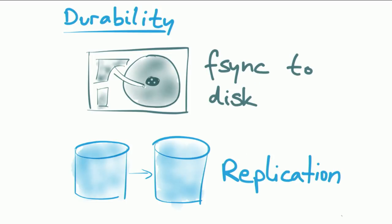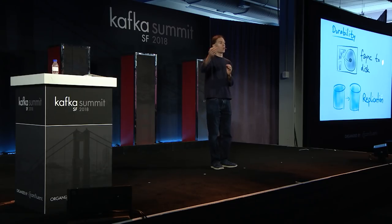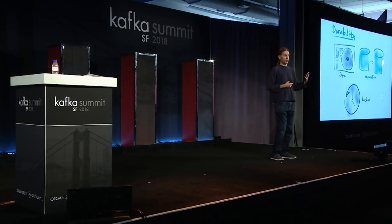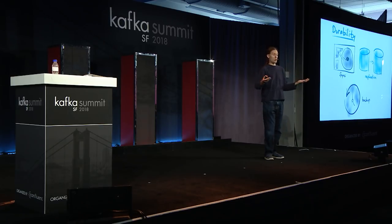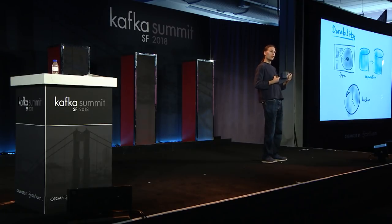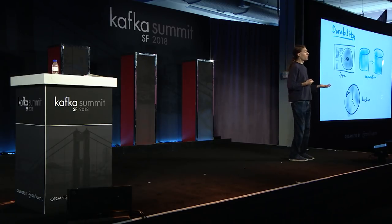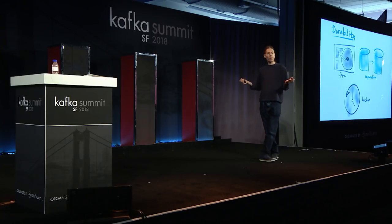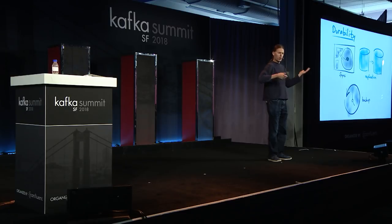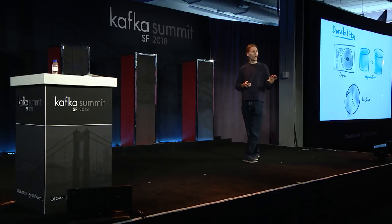More recently, the definition of durability has been extended to include replication — not only do we want data written to disk on one machine, but copied across several different machines, so that if you lose an entire machine, you can switch over to a copy on a different machine. Both of those, Kafka does perfectly well. Kafka writes all messages you publish to disk and replicates those messages across multiple machines. The only remaining part is backup and restore — if you have important data in Kafka, you would need to back it up. So I think we can basically tick off durability.